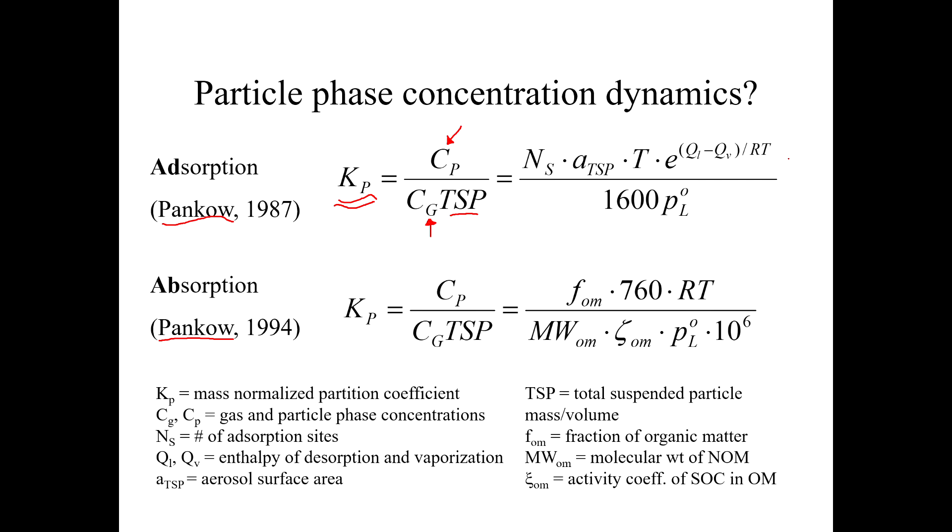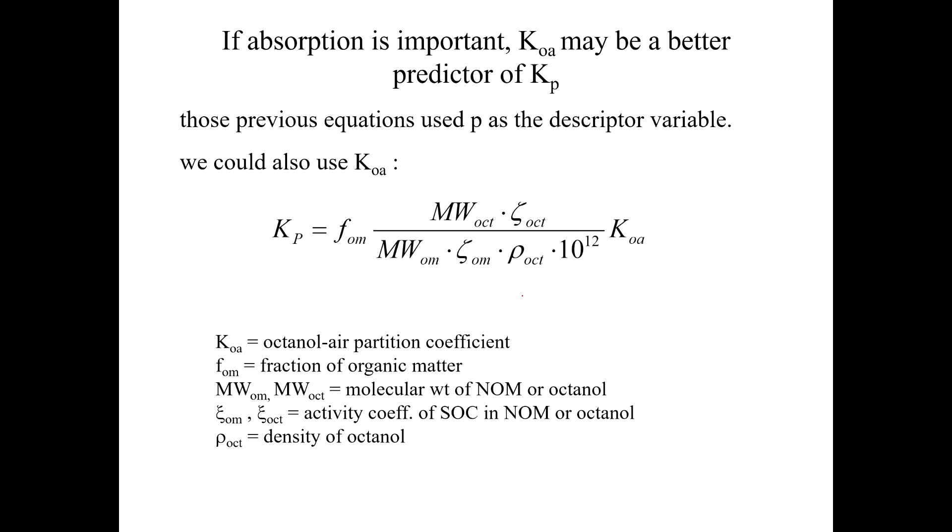Using this Kp value, he said I can come up with a couple of equations that would explain how this works if you have an adsorption mechanism and also if you have an absorption mechanism. The important thing to notice about them right now is that they both involve using the hypothetical subcooled liquid vapor pressure of the chemical, or the liquid vapor pressure, and if the chemical is a solid, then you have to use the hypothetical. You should be able to describe gas particle partitioning by using the vapor pressure. Jim Pankow also recognized that if absorption within a three-dimensional matrix is important, then octanol air partition coefficient might be a better descriptor.